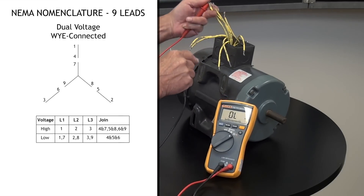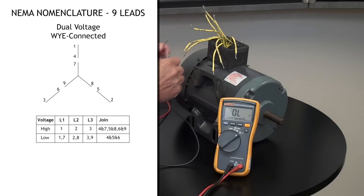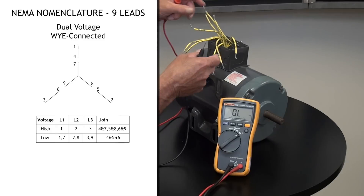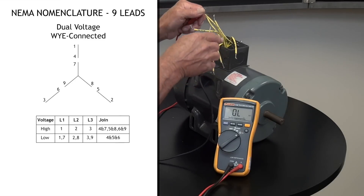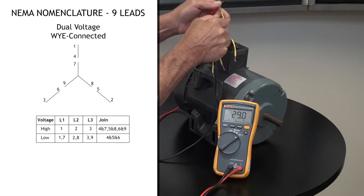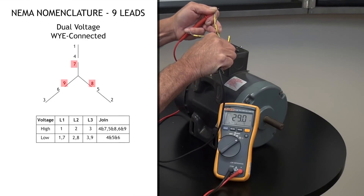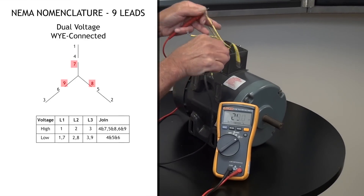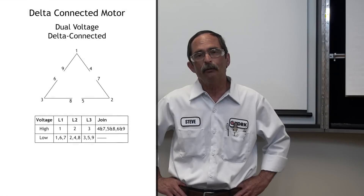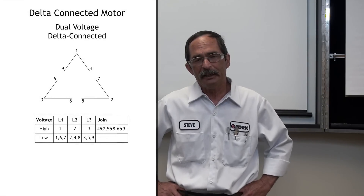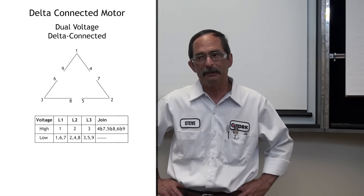This will be a Y connected motor, because we have combinations of two. We can confirm this because on a Y configuration, we'll have continuity between seven, eight, and nine. If instead we end up with three combinations of three when checking continuity, that indicates a delta configuration. The high voltage connection, whether it's Y or delta, is going to be the same.